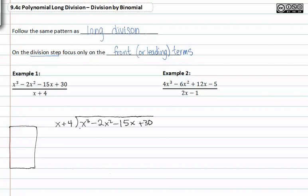I take the first term in my dividend and divide it by the first term in my divisor to get x squared. This is what I put in my quotient. Now I take that term and multiply it to each term in the divisor.